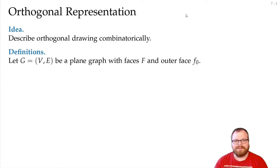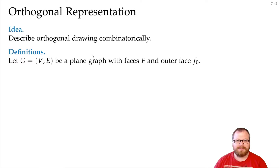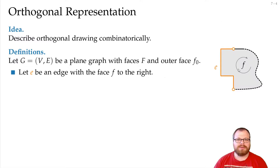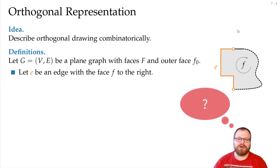Let's say we have some graph with the set F of faces, where F0 is the outer face. It's a planar graph, so we also have a planar embedding. We want to look at a single edge E and the face that lies to the right of it. For this face, we consider the clockwise order. What information do we have to store for edge E so that we can construct a drawing?